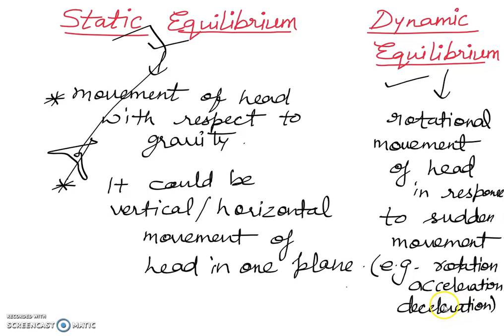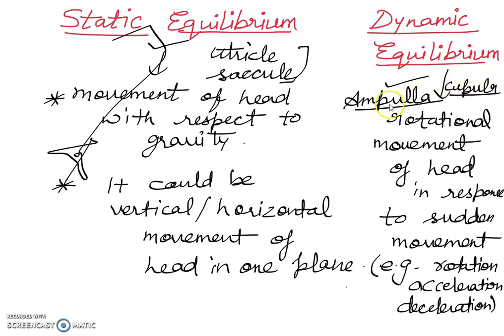If we talk about static equilibrium and dynamic equilibrium, I will tell you that there is movement of membrane within the utricle and the sacculus. Utricle and sacculus account for static equilibrium. And if we talk about dynamic, here is the ampulla region involved. So the movement of ampulla and cupula, ampulla and cupula within the semicircular canal. Semicircular canal, and these are responsible for dynamic equilibrium.